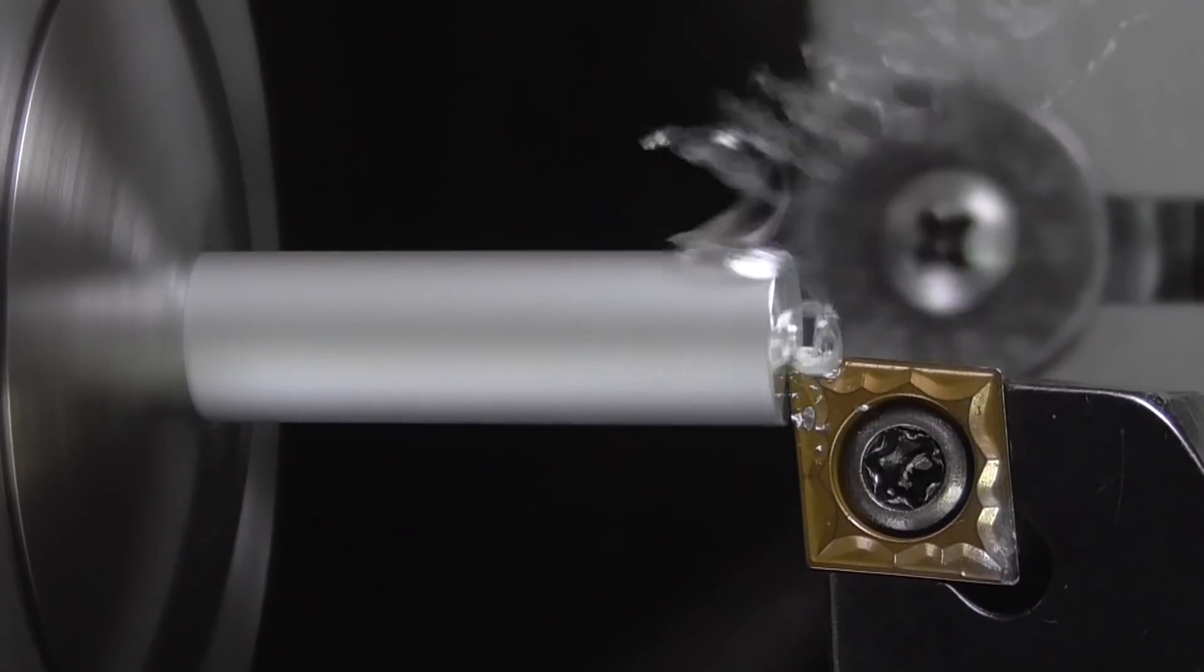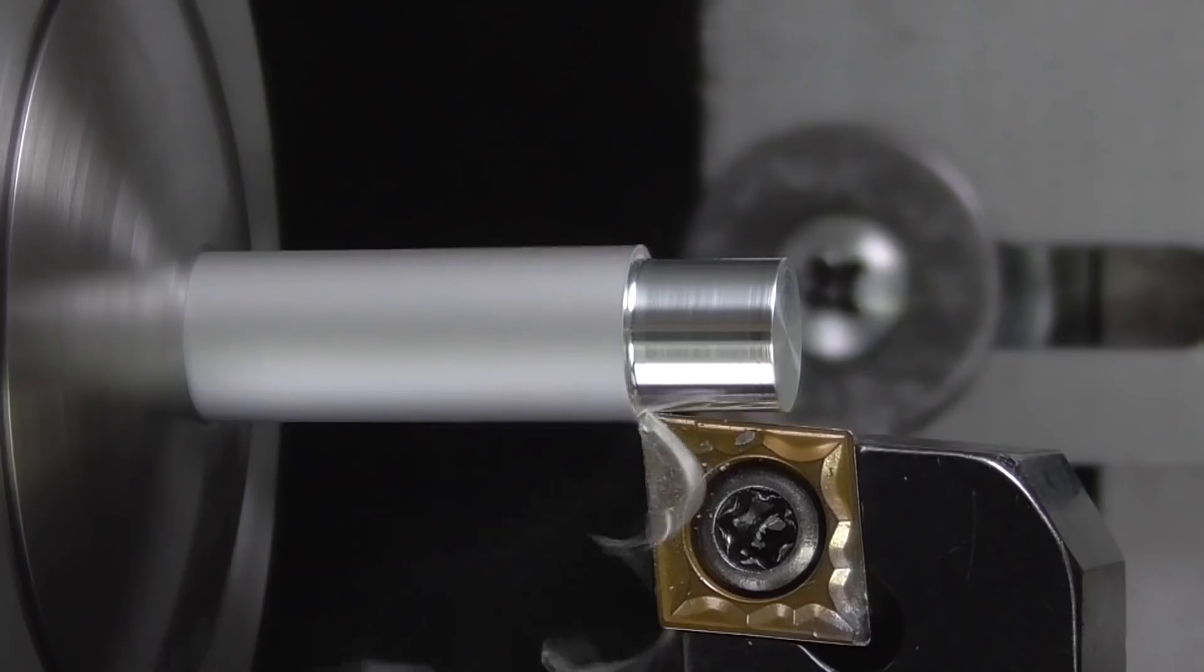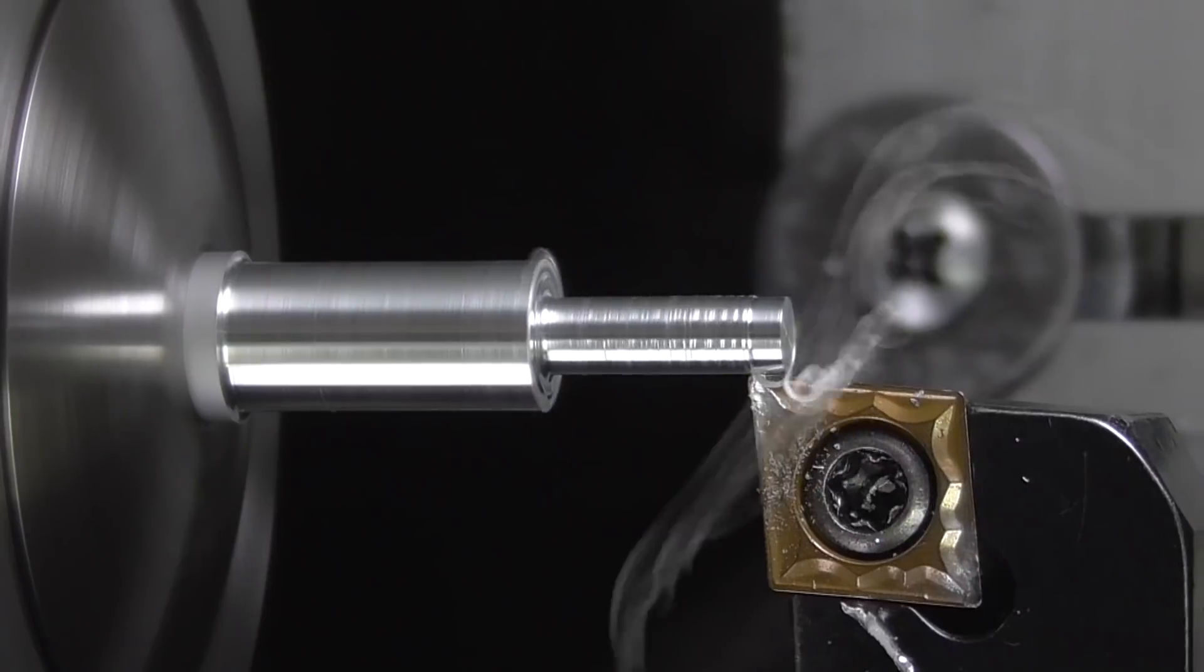Right here I'm turning an aluminum part. It has a smaller diameter in front, followed by a bigger one.